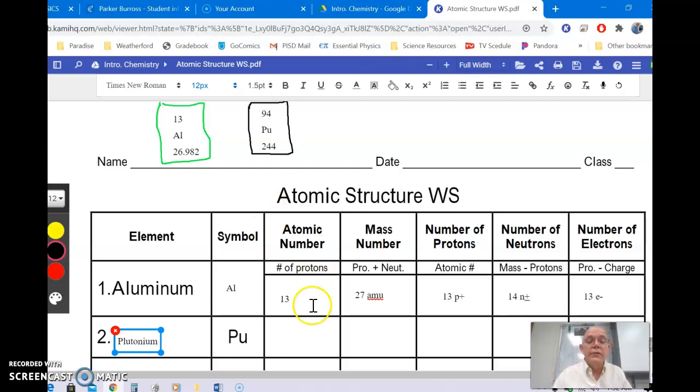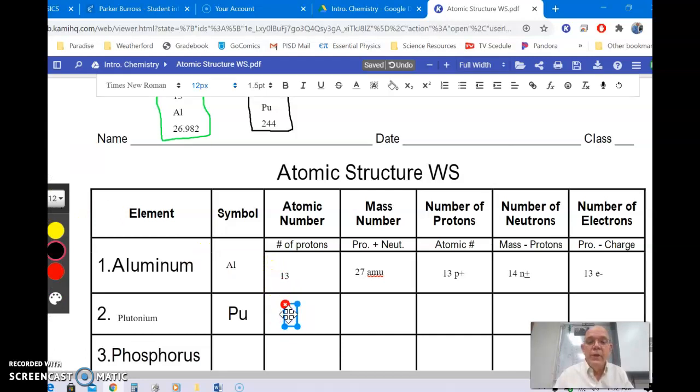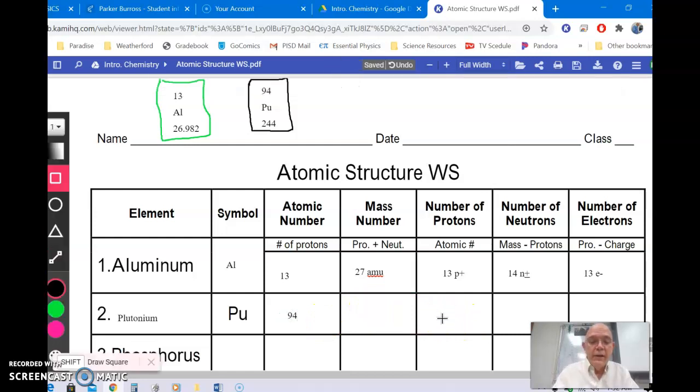So, first of all, let me write the name out. It is element 94, so it's atomic number is 94. That means the protons is 94.